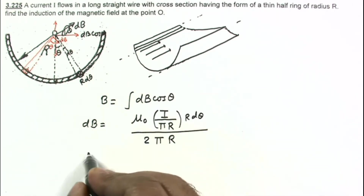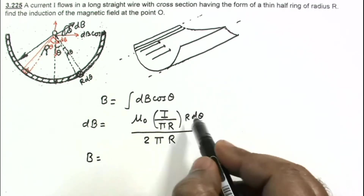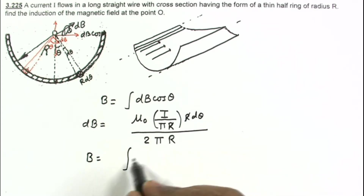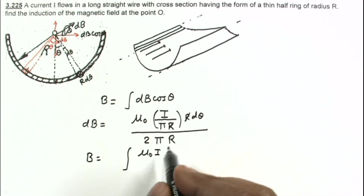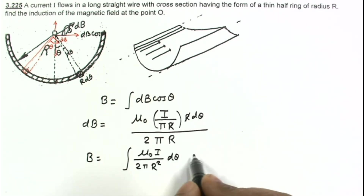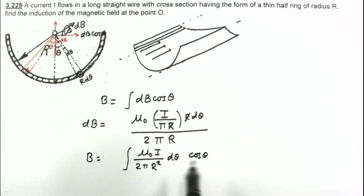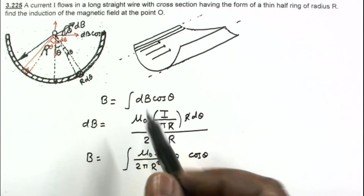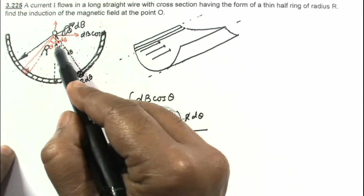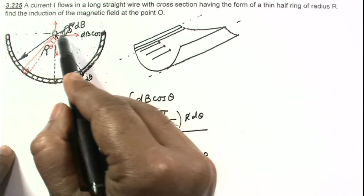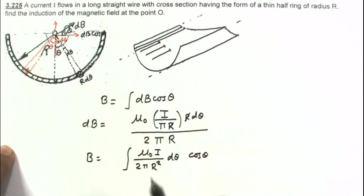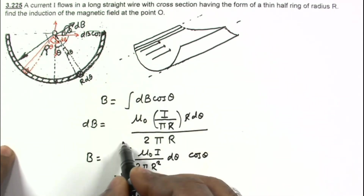Substituting into the integral, the r terms cancel, giving B equal to the integral of mu naught i divided by pi squared r, multiplied by cos theta d theta. The limit of theta runs from minus pi by 2 to plus pi by 2, covering the full half ring — from 0 to pi by 2 on one side and minus pi by 2 to 0 on the other.